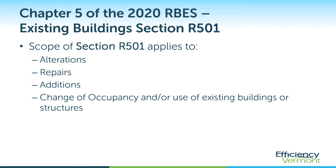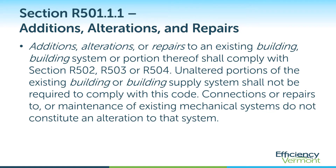The scope and application of chapter 5, section R501, applies to all alterations, repairs, additions, and changes of occupancy and/or use of existing buildings or structures. Section R501.1.1 of the RBES code applies to additions, alterations, and repairs of existing buildings, building systems, or portions thereof, and these components shall comply with sections R502, R503, or R504 of the full code. Unaltered portions of an existing building or building system are not required to comply with the code, and connections, repairs, or maintenance of existing mechanical systems do not constitute an alteration to that system.